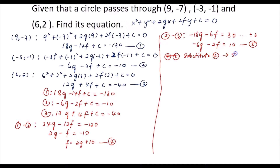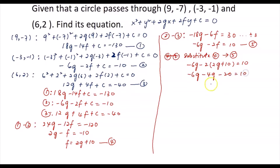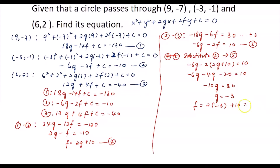Substitute Equation 4 (f = 2g + 10) into Equation 5: -6g - 2(2g + 10) = 10, which gives -6g - 4g - 20 = 10, then -10g = 30, so g = -3. With g = -3, substitute back into Equation 4: f = 2(-3) + 10 = -6 + 10 = 4.